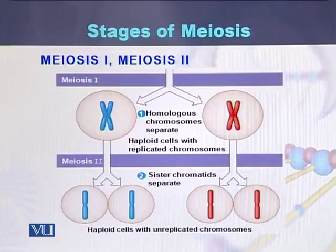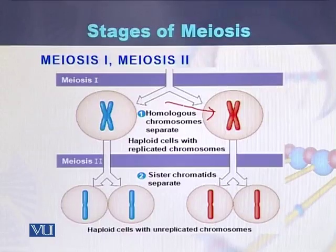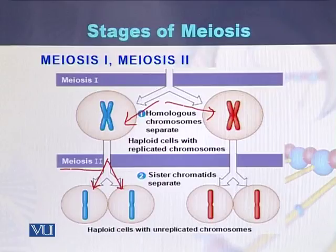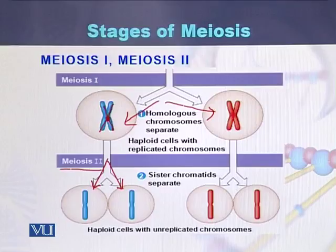What will happen in meiosis I and meiosis II? In meiosis I, the homologous chromosomes separate — one chromosome goes into each daughter cell. One homologous chromosome goes into one daughter cell and the second homologous chromosome into the second cell. Then in meiosis II, each daughter cell undergoes a process like mitosis and is divided, and the sister chromatids which were joined in the mother cell will separate, with each chromatid behaving as an individual chromosome.